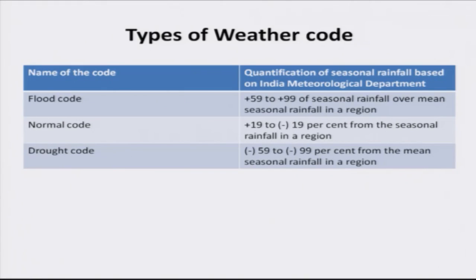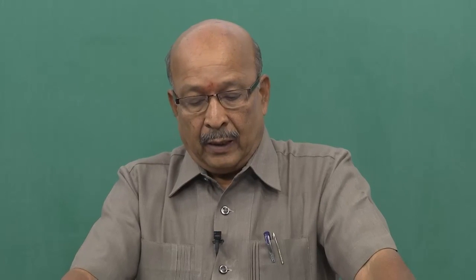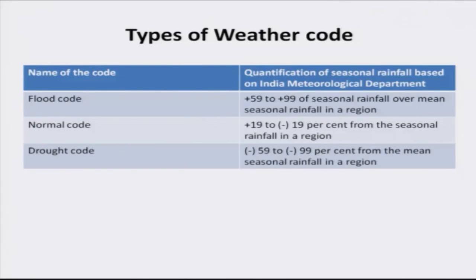On the positive side there is flood code: if the deviation from normal rainfall is plus 59 to plus 99 percent, that is wet and excess, it is classified as flood code. On the other extreme is drought code, where the rainfall deviation from mean is minus 59 to minus 99 percent — extreme moisture deficiency. In between these two extremes is the normal weather code.